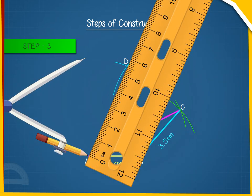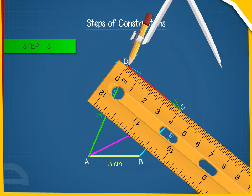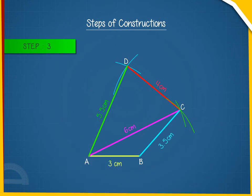Join A to D and C to D to get the quadrilateral ABCD. ABCD obtained is the required quadrilateral.